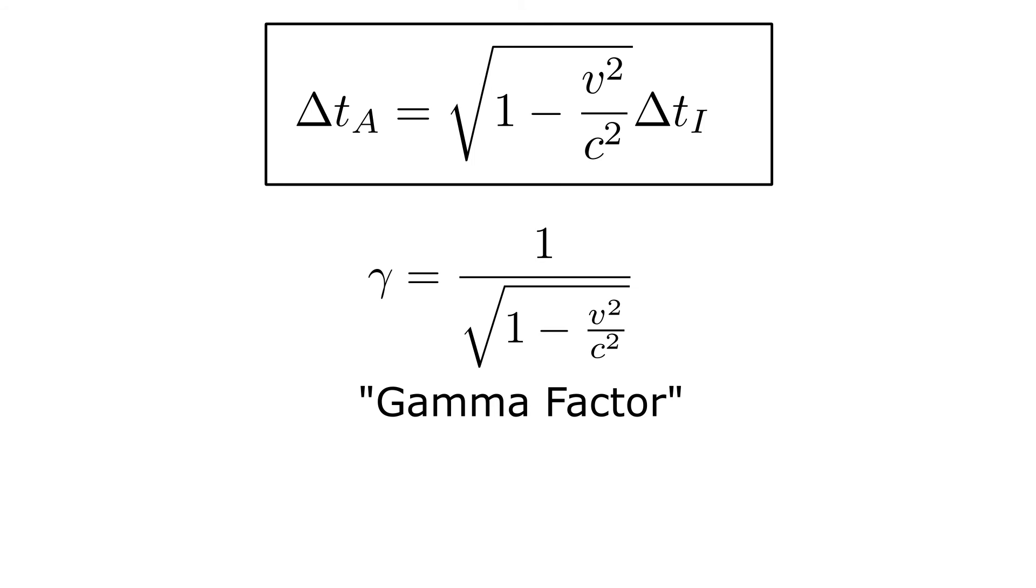It is also worth pointing out that for speeds much smaller than the speed of light, the gamma factor just reduces to 1, and you obtain the results of Galilean relativity. In this case, the time is never different between reference frames.